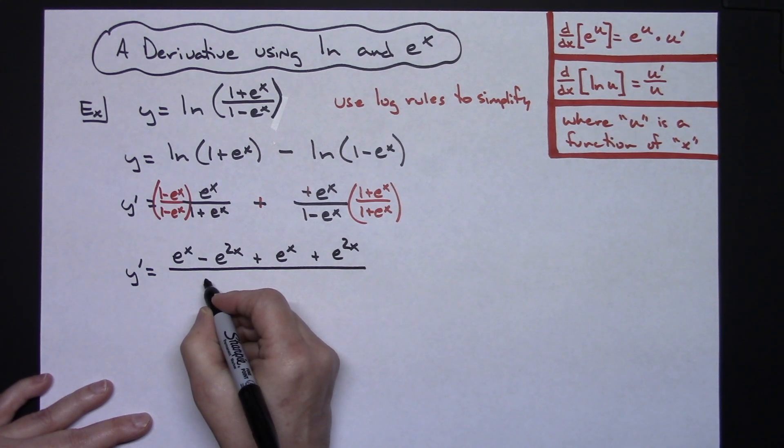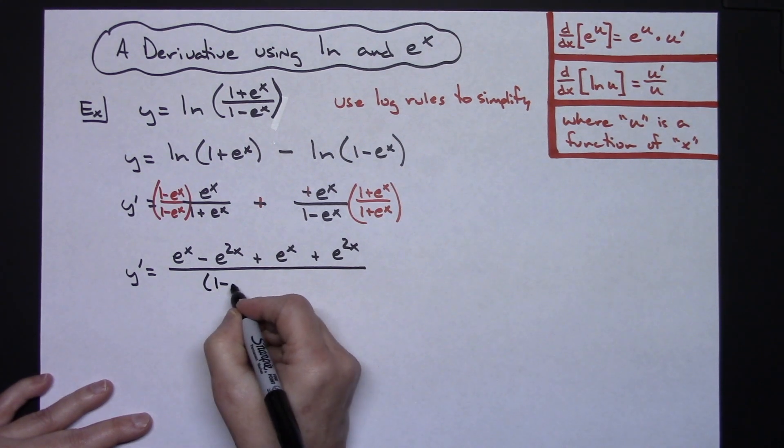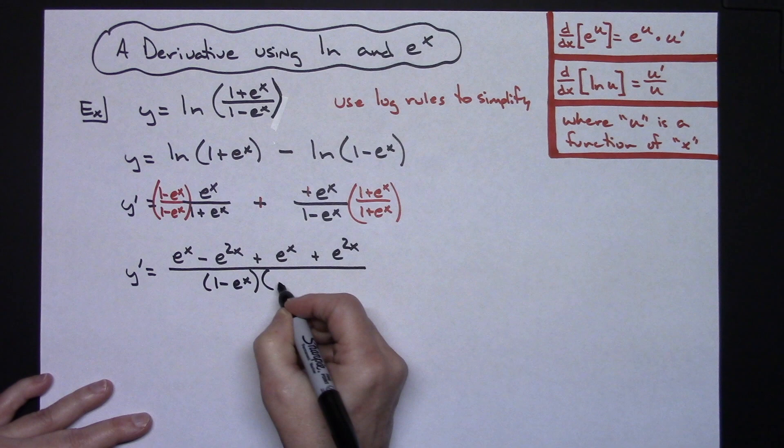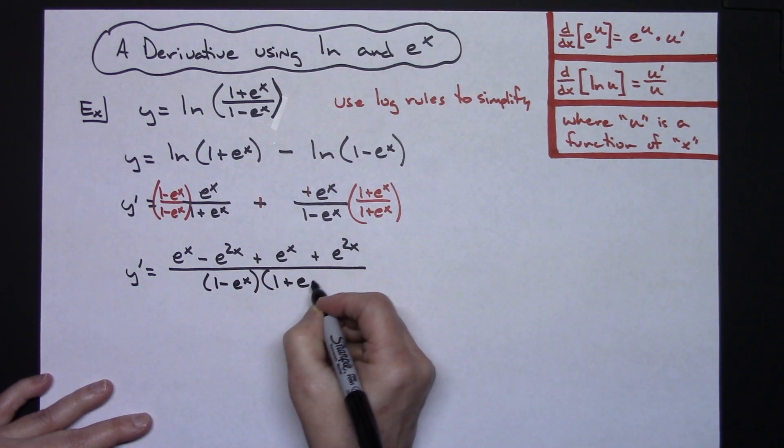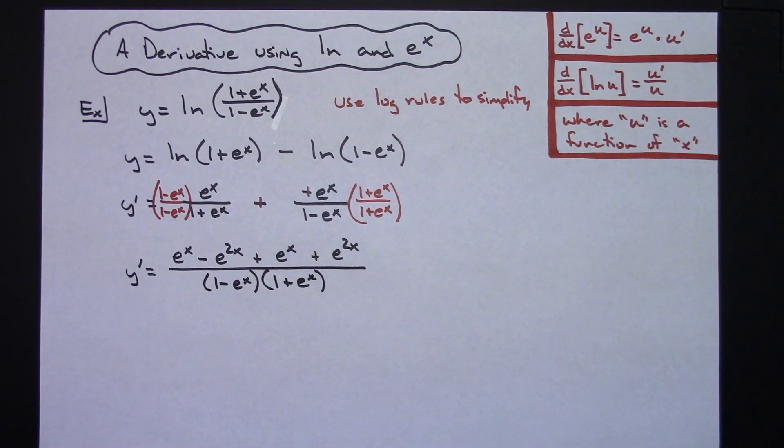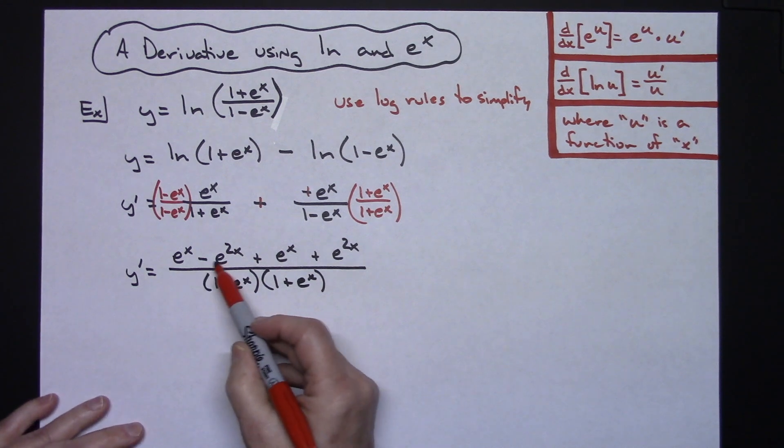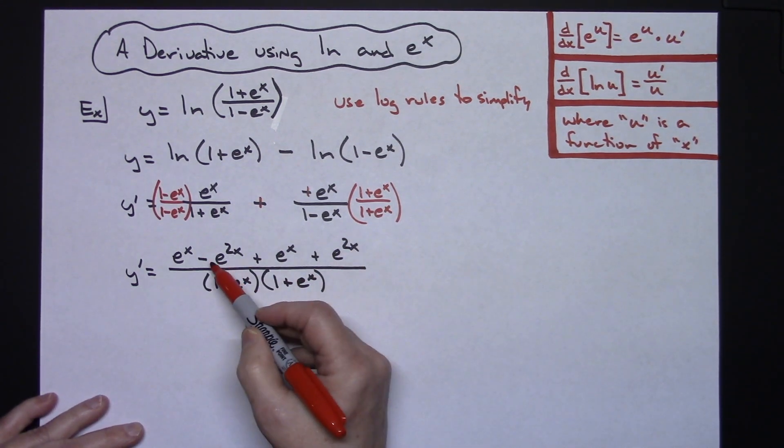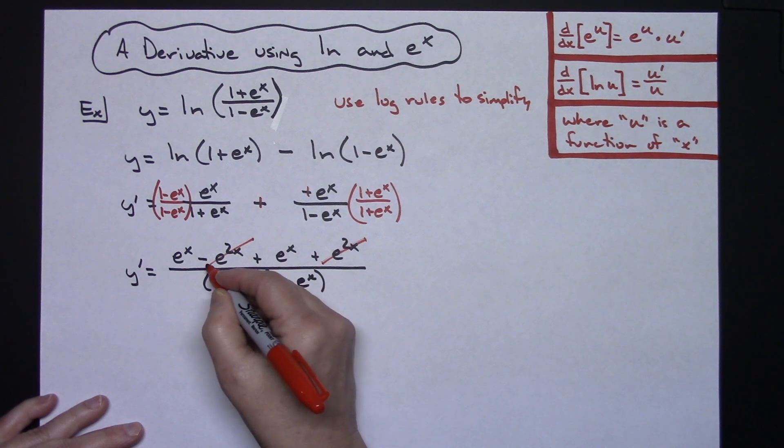And then all over that denominator we're just going to leave it the way it is. So 1 minus e to the x and then 1 plus e to the x. Now simplifying that numerator I've got negative e to the 2x and a positive e to the 2x. So those two are going to cross out.